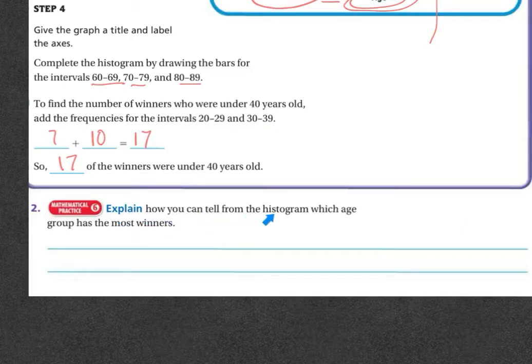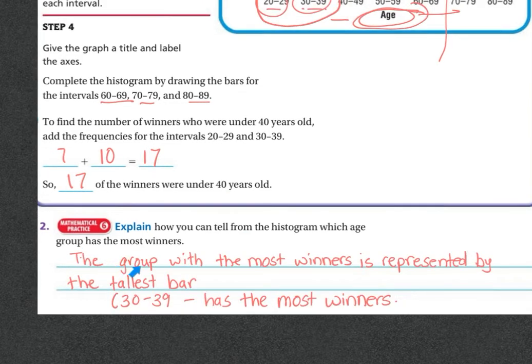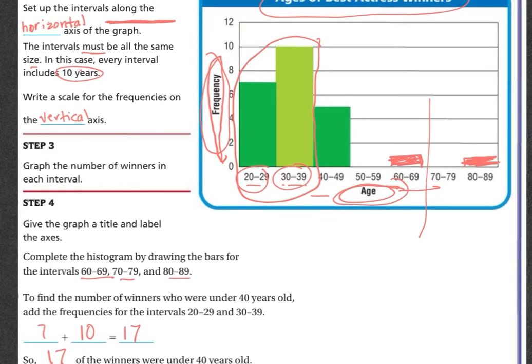Explain how you can tell from the histogram which age group has the most winners. So the group with the most winners is represented by the tallest bar, and that would be the 30 through 39. So if we look right here, the tallest bar is right here. It's the 30 through 39. It has 10 members.